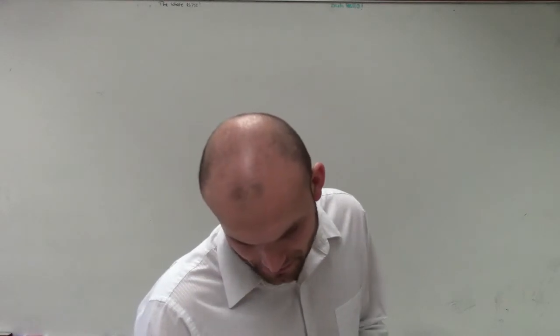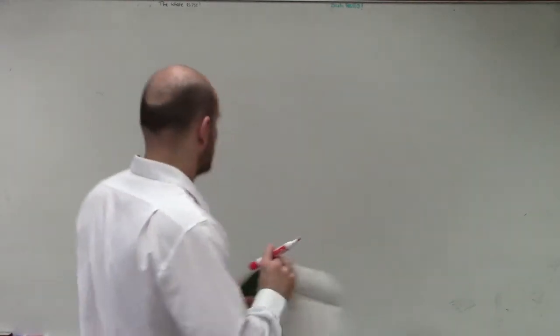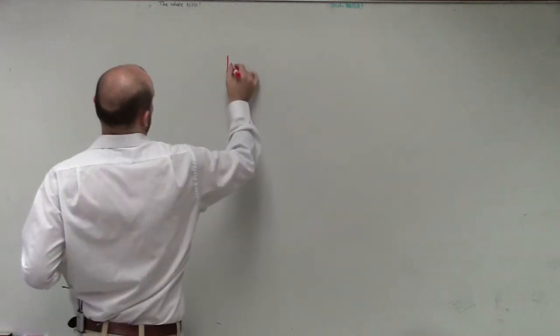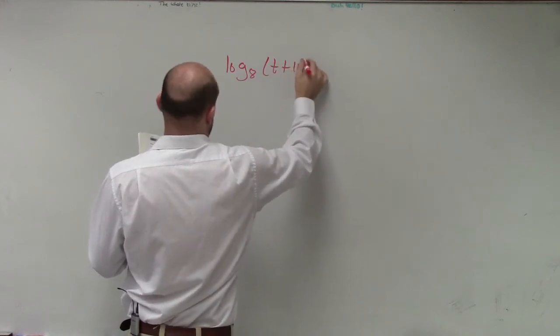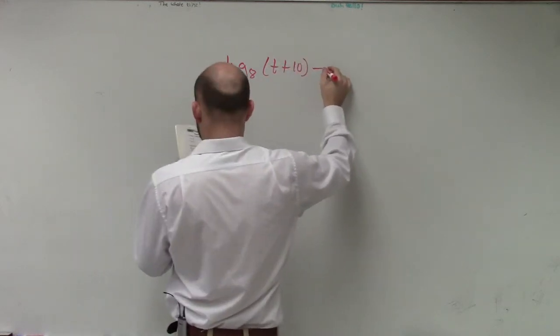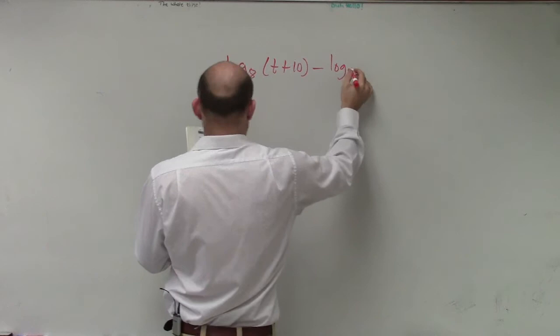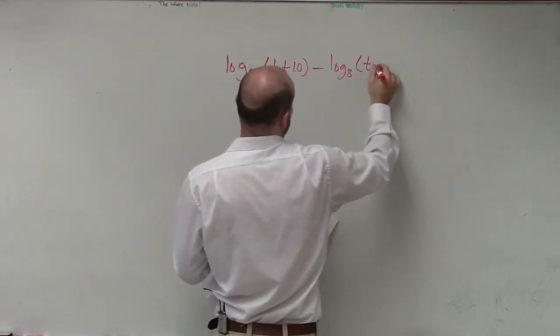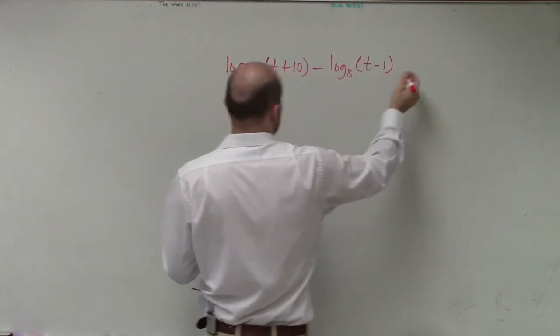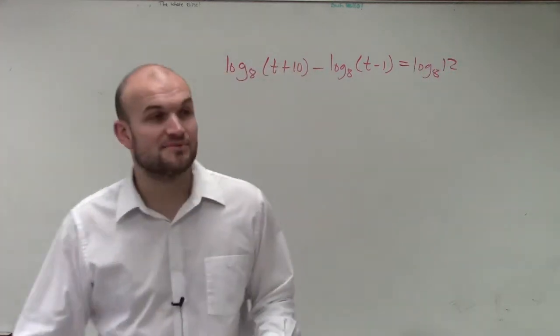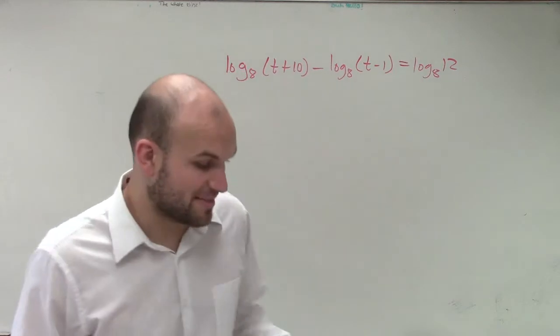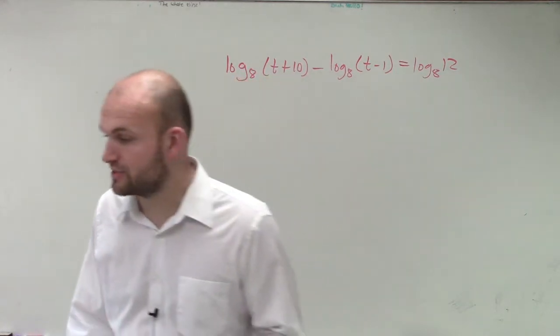Let's look at number 19. It says log base 8 of t plus 10 minus log base 8 of t minus 1 equals log base 8 of 12. I've already seen some students make this mistake, so I want to make sure this is page 106, question number 19.